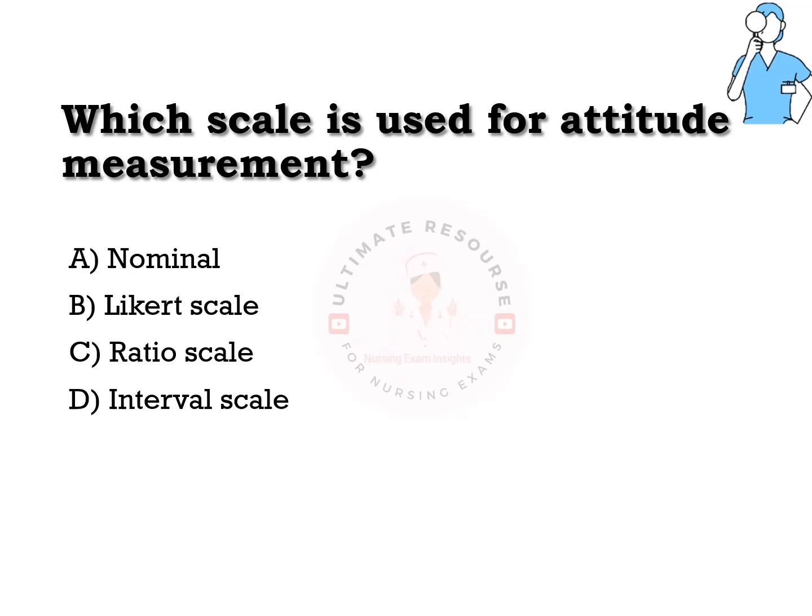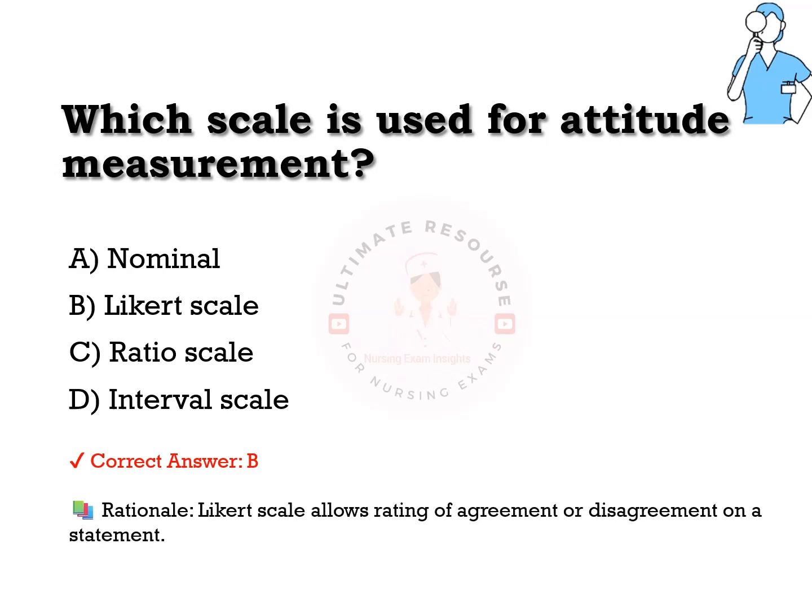Which scale is used for attitude measurement? Options are a) nominal, b) Likert scale, c) ratio scale, d) interval scale. The answer is b) Likert scale. Likert scale allows rating of agreement or disagreement on a statement.